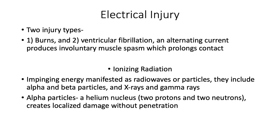Electrical injury has two types: burns and ventricular fibrillation. Alternating current produces involuntary muscle spasm which prolongs contact with the offending electrical source.